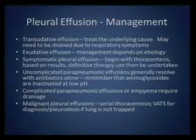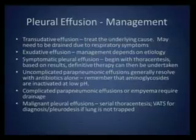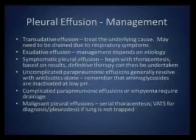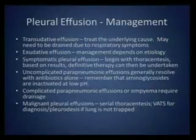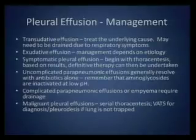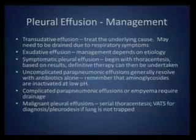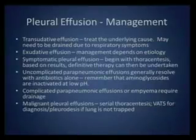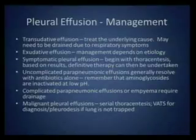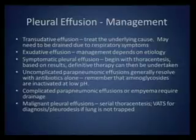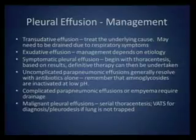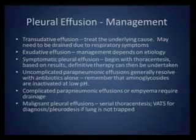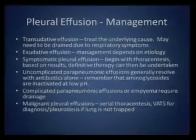Complicated effusions or empyemas may require drainage - the question is how do you drain it. Malignant pleural effusions are easy to determine: you'll get a call about a relatively asymptomatic patient where a thoracentesis was done and it's bloody. A bloody pleural effusion in the absence of trauma is a malignancy until proven otherwise. You may need to do VATS for diagnosis. You'll see studding or a mesothelioma, and you do a pleurodesis only if the lung is not trapped. You need to be very judicious about VATS with pleurodesis in the face of a malignancy, because if the lung doesn't expand, the pleurodesis won't work.